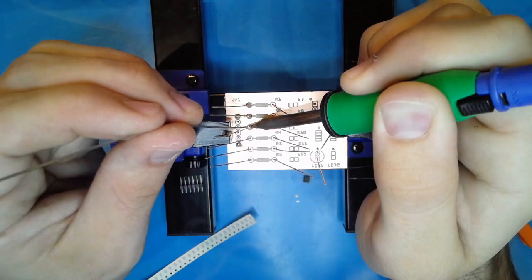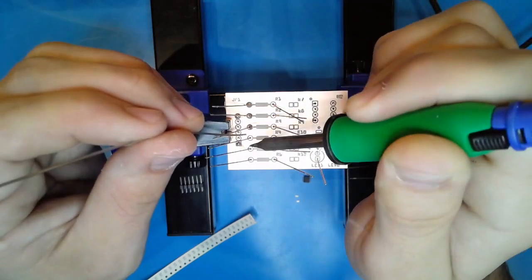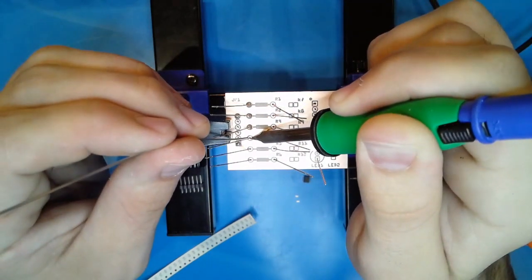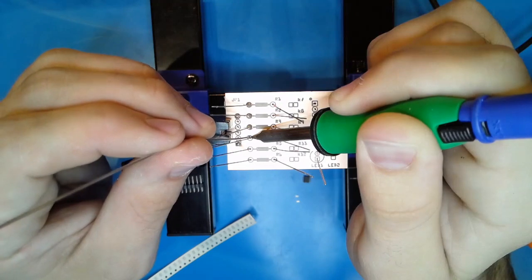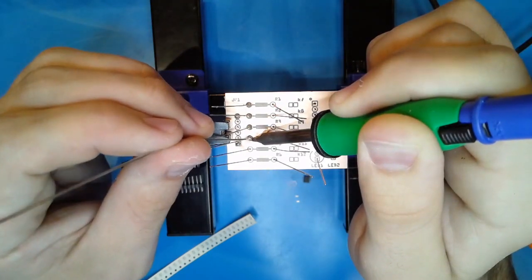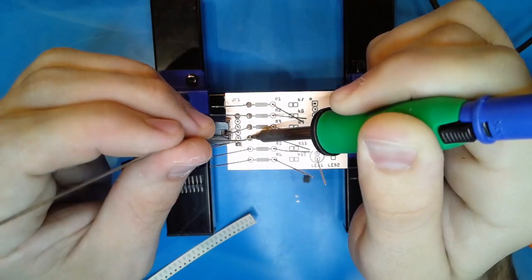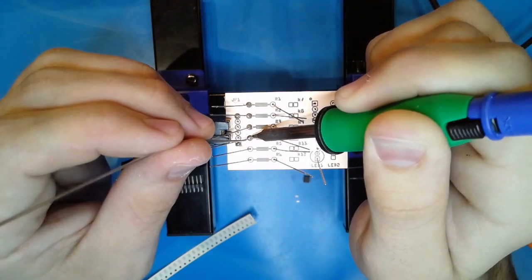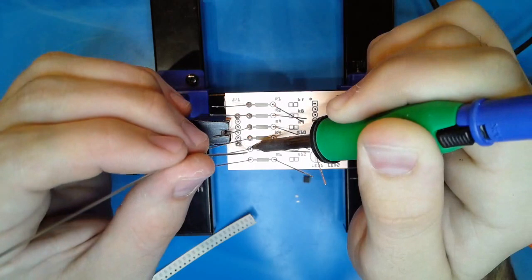The proper technique for through hole components is to first heat the joint. Make sure the iron is touching both the leg of the component and the pad. After a few seconds, introduce the solder and let it flow over the joint. Remove the solder and continue heating for 1-2 seconds. Lastly, remove the soldering iron.